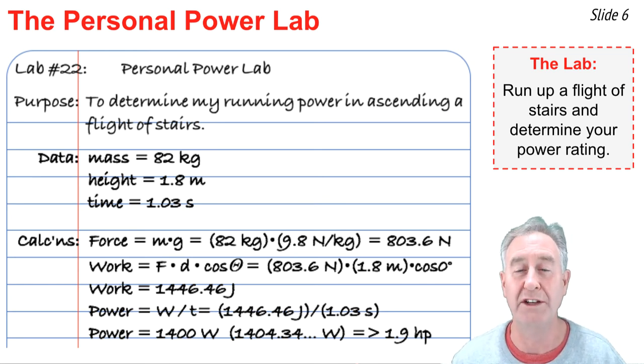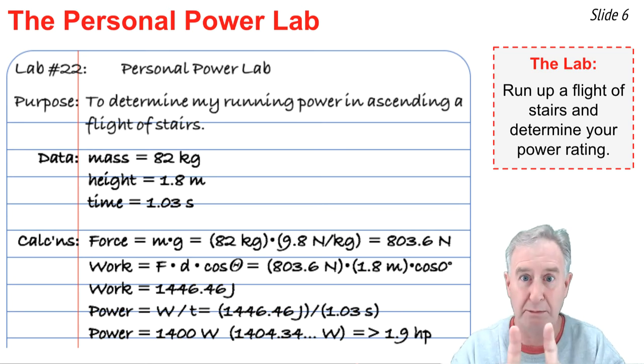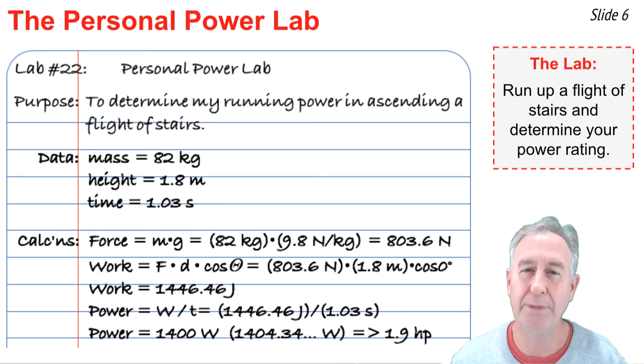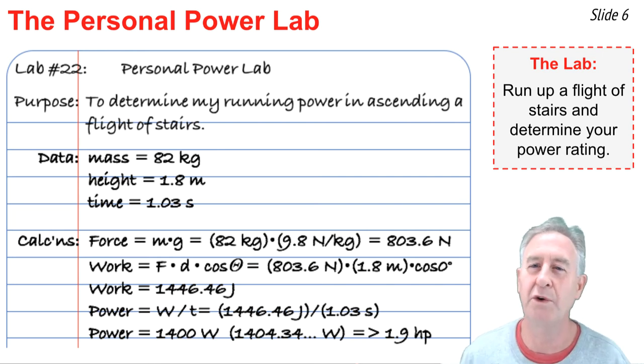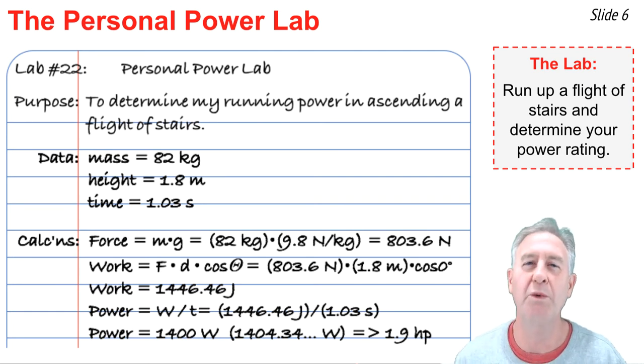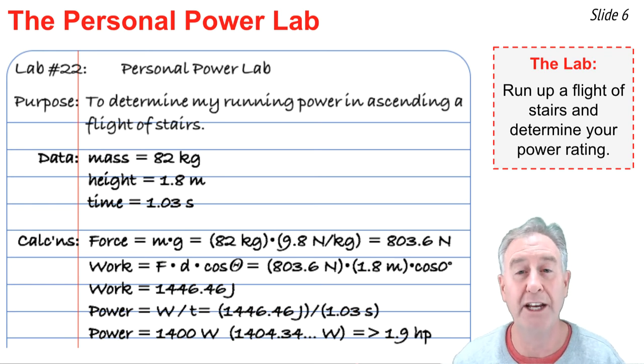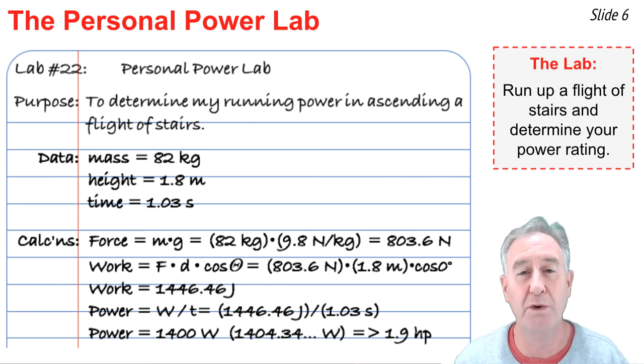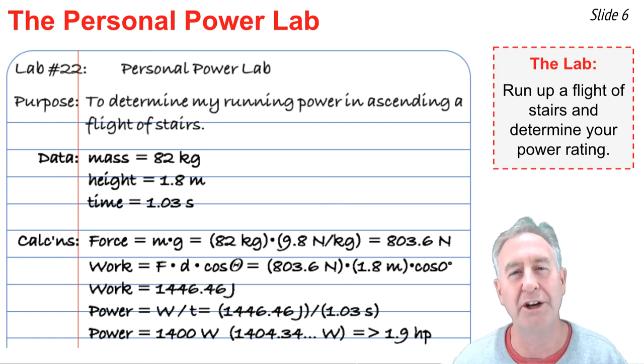Now, I can calculate the work. The work is the force times the displacement, times the cosine of the angle between the force and the displacement. So, we will go 803.6 newtons times 1.8 meters times the cosine of zero degrees, and we get 1,446 and some change joules. Now, we're ready to calculate the power. We'll go 1,446.46 joules divided by the 1.03 seconds, and we get a power of 1,404 and some change watts. Or, rounded to two significant digits, about 1,400 watts. This is equivalent to 1.9 horsepower.